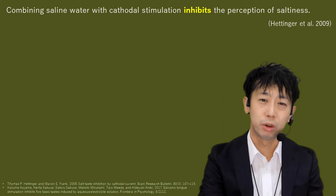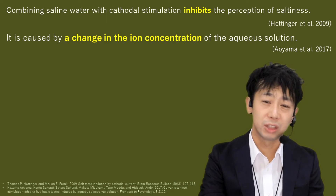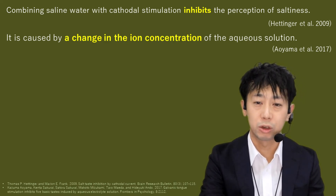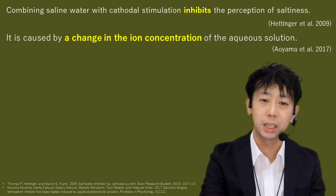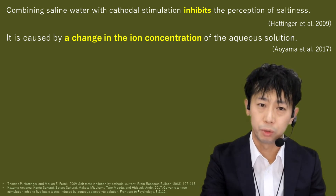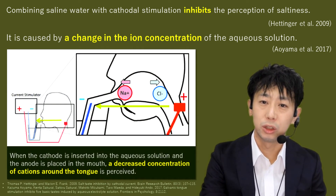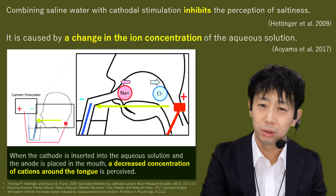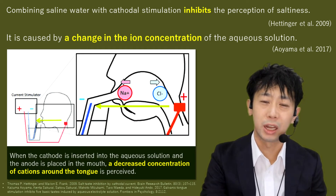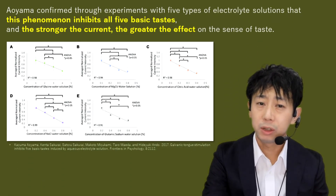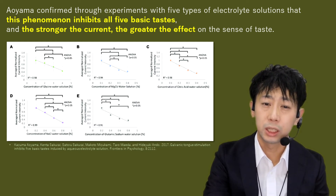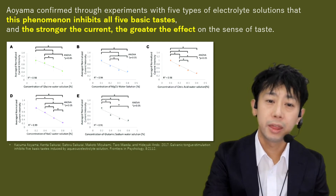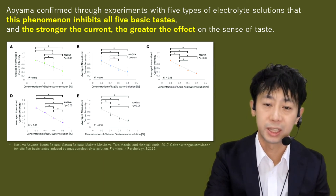Hellinger discovered that combining saline water with cathodal stimulation inhibits the perception of saltiness. However, the fundamental relation is not between the sense of taste and the electrical stimulation of the tongue. Rather, the inhibition of taste is caused by a change in the ion concentration of the aqueous solution. When the cathode is inserted into the aqueous solution and the anode is placed in the mouth, a decreased concentration of cations around the tongue is perceived. Aoyama confirmed through experiments with five types of electrolyte solutions that this phenomenon inhibits all five basic tastes, and the stronger the current, the greater the effect on the sense of taste.